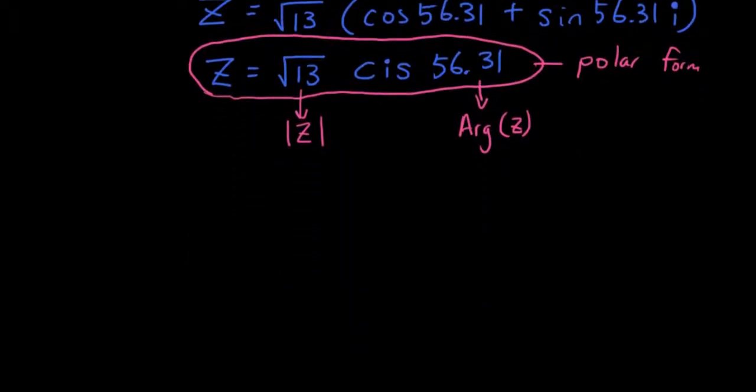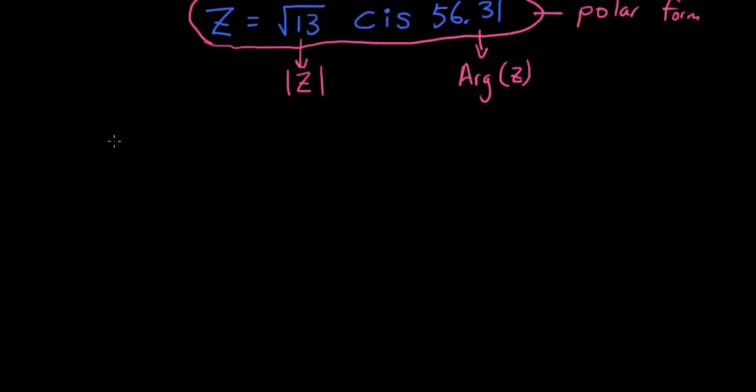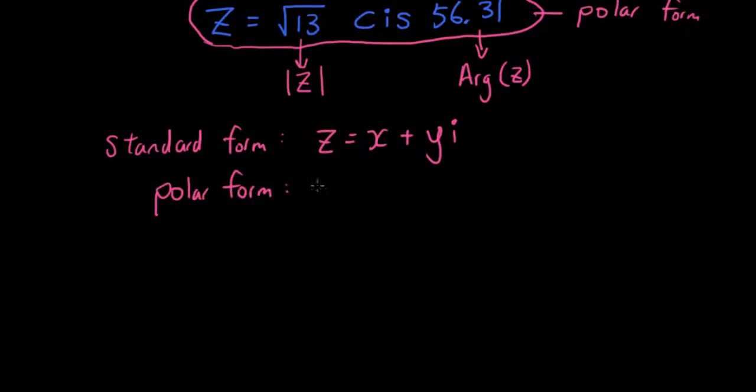So basically the formula that you need is: in standard form, if we have z equals x plus yi, where x and y are real numbers, then in polar form, what you will have is z equals r cis theta.